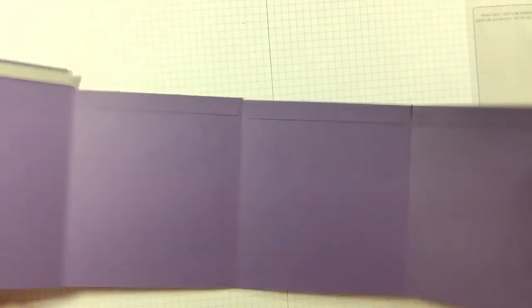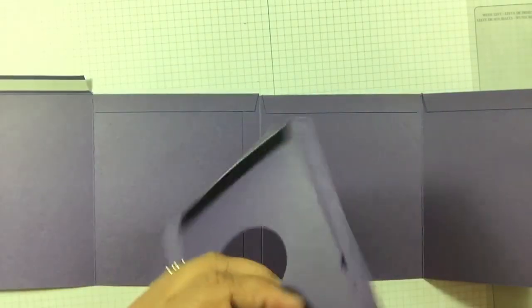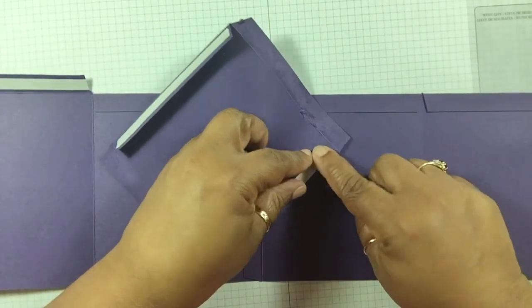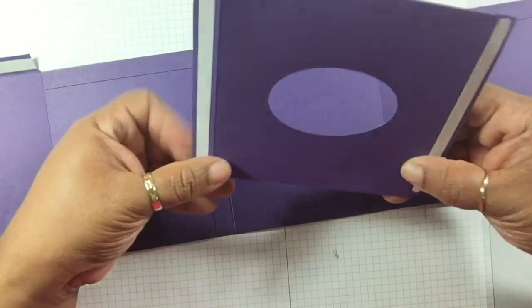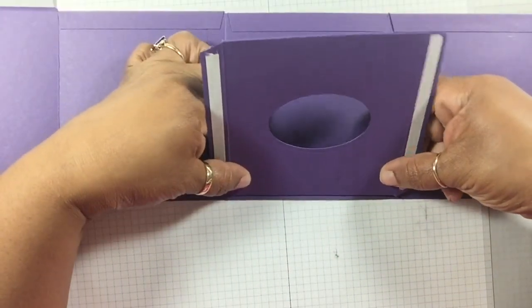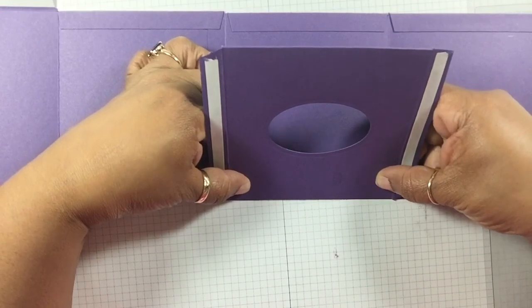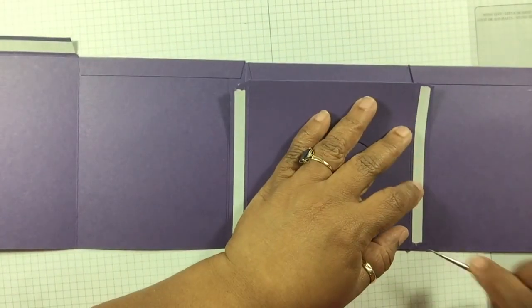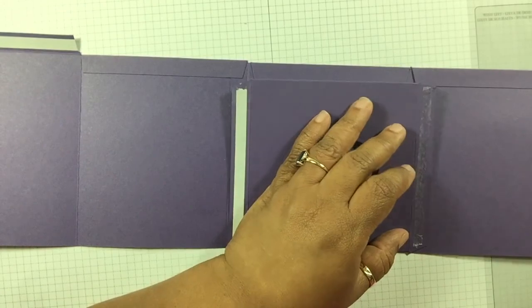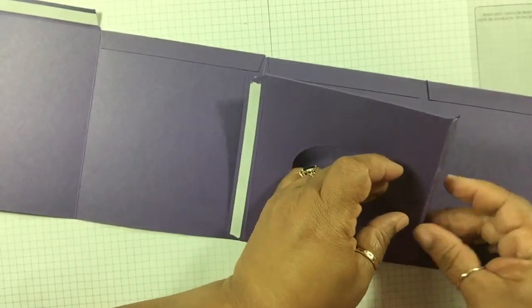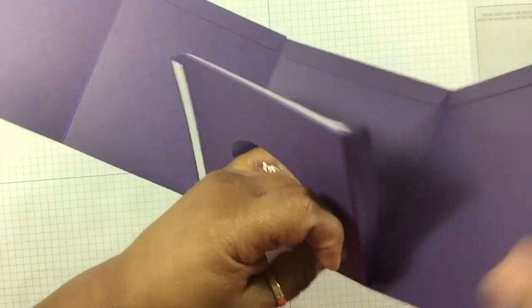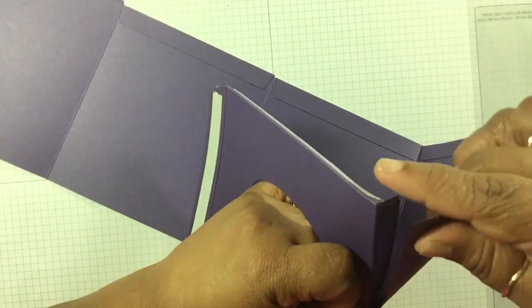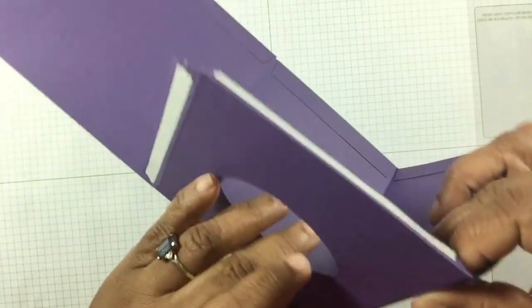But we're not going to put it together just yet because we're going to adhere tops down. And basically what I do is I center it on the fold and fold it down, and then I do the next side. You can fold it over to the top and secure it, and same thing for each of the other sides.